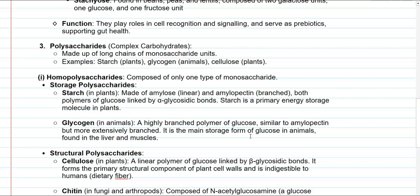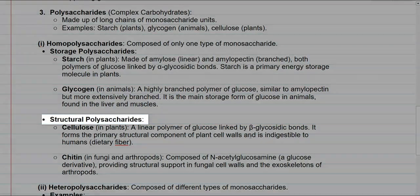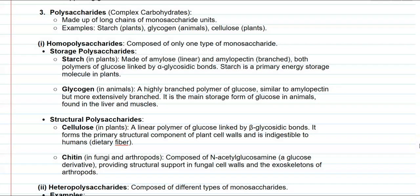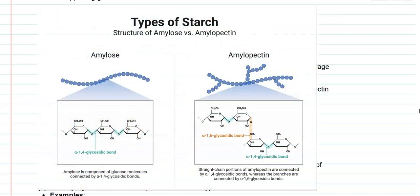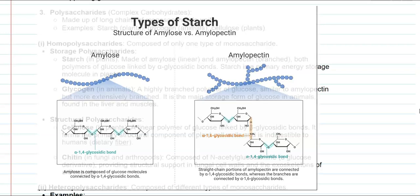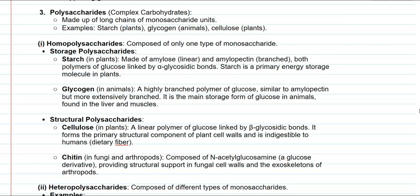Under homopolysaccharides, they are classified into storage polysaccharides and structural polysaccharides. Homopolysaccharides are mainly composed of only one type of monosaccharide. The first example is starch, commonly found in plants. Starch can be made up of amylose, a linear form of polysaccharide, or amylopectin, a branched form. Both polysaccharides have glucose as their monomeric units, linked by alpha glycosidic linkages. Starch primarily serves as an energy storage molecule in the plant system.